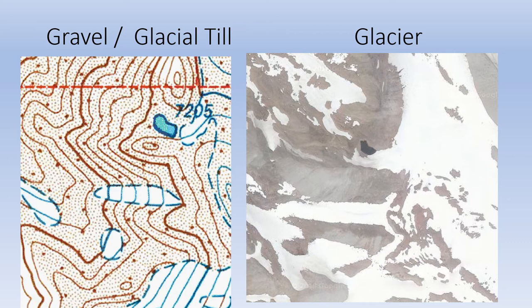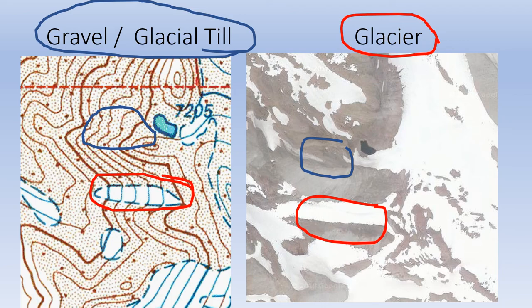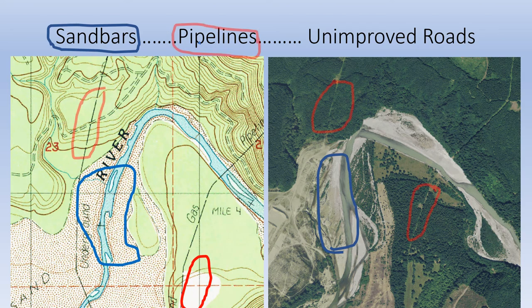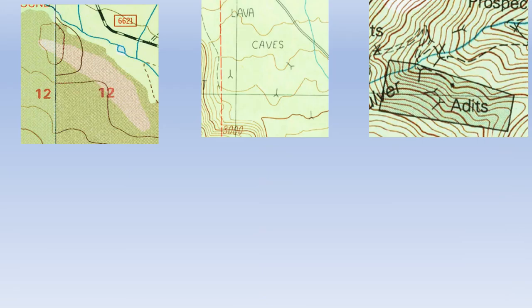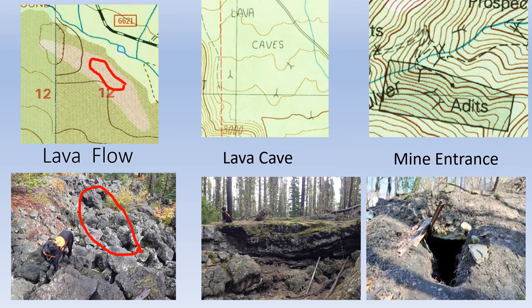Symbols for scree, talus, or glacial till high up on a mountain will also indicate sand and gravel along streams lower in the drainage. Here is a look at sandbars, pipelines, and unimproved roads. Lava flows, lava caves, and old mines are hazardous places to search.